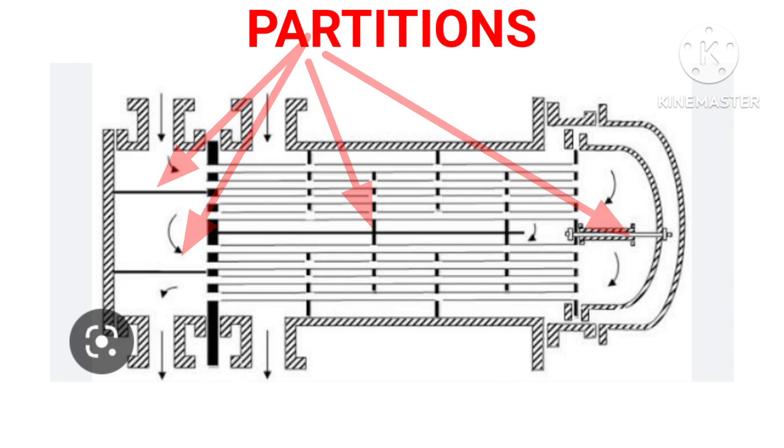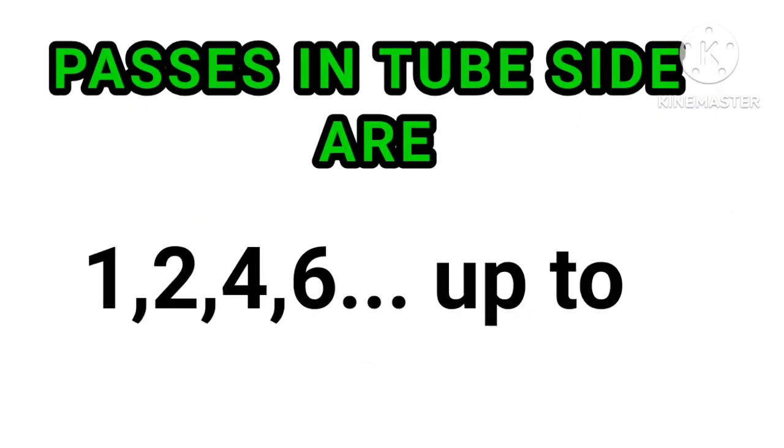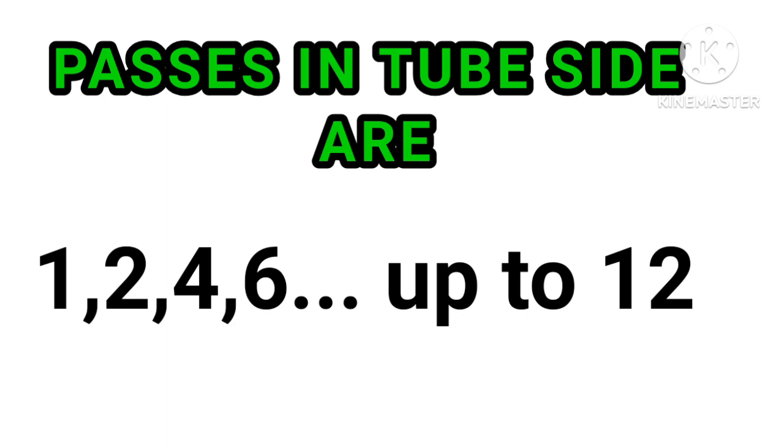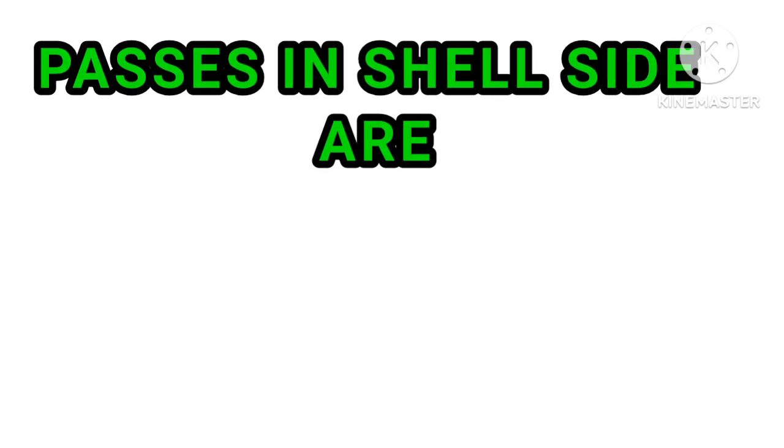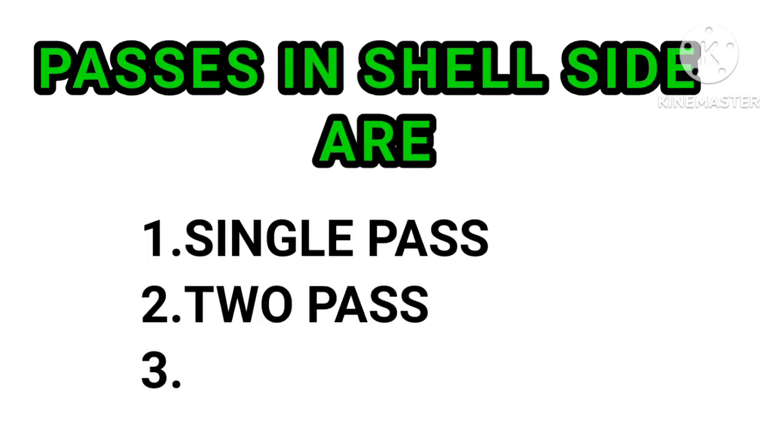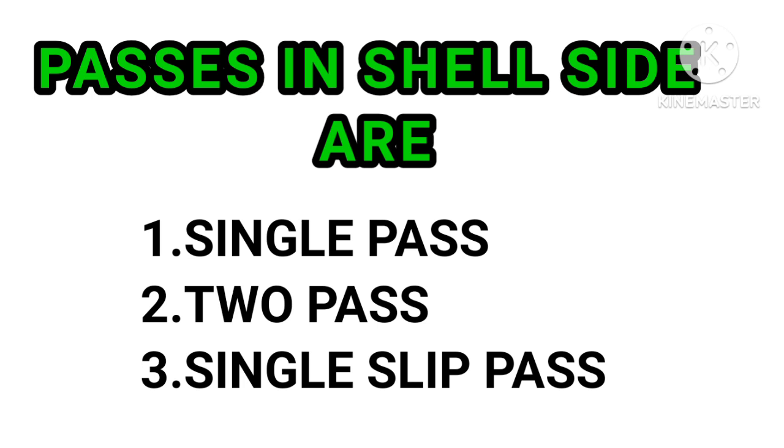Now we will learn about passages. Passes are formed by partition plates in shell cover and channels in tube-side as shown in figure. The passages on the tube-side can be one, two, four, six, up to twelve, and passages on shell-side include single-pass, two-pass, and single-slip-pass.